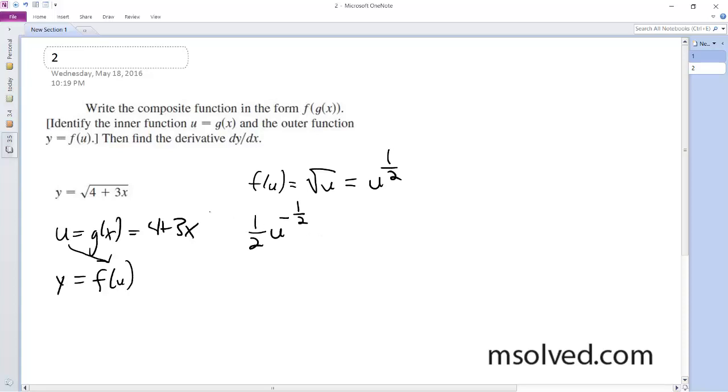And the derivative of what's inside is simply equal to 3. So we end up with dy dx du dx is equal to 1 half u raised to the negative 1 half.